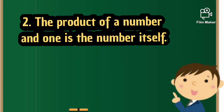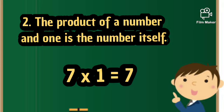The second property of multiplication is the product of a number and one is the number itself. This means that any number when multiplied by one will give the same number as itself. For example, here you can see 7 × 1 = 7.